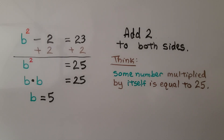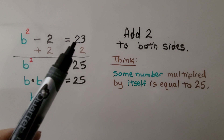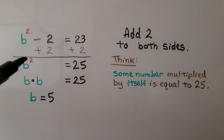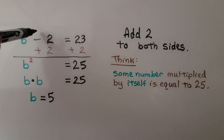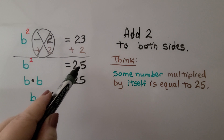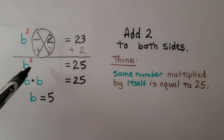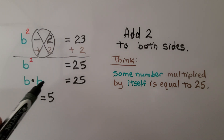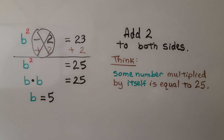Here's a brain stretch: we have b raised to the second power minus 2 is equal to 23. We want to eliminate the minus 2 to get the variable by itself. So we add 2 to both sides — we have a minus here, so we do the opposite and add. This creates a zero pair and we eliminate it, adding 2 to the other side to get 25. Now we have b squared is equal to 25. We think: what number multiplied by itself equals 25? It could be 5 times 5, so b is equal to 5.